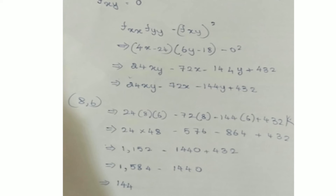Substitute the critical numbers x = 8 and y = 6 into the expression. We get 36(8)(6) - 108(8) - 144(6) + 432 = 1728 - 864 - 864 + 432 = 432. Wait — the computed result gives a positive value of 144 for f_xx · f_yy - (f_xy)².